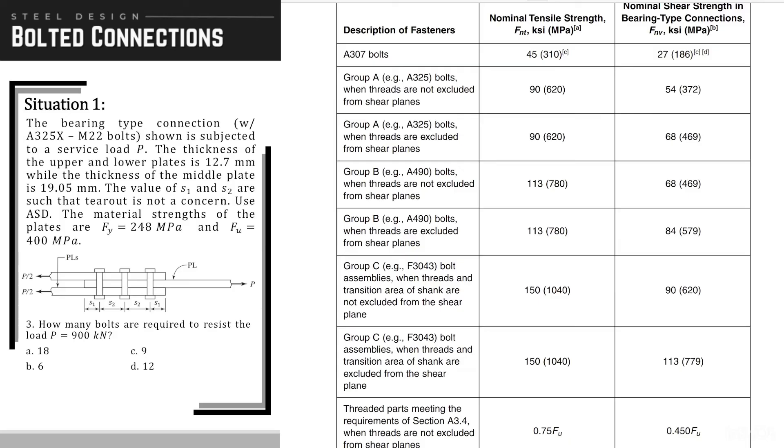So based on the problem, the type of the bolts being used is A325X. So the letter X means that the threads are excluded. So meaning, we are looking for this type of bolts. So the Fnv is 469 MPa.